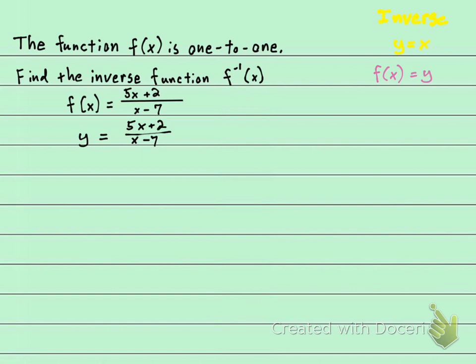So to get the inverse, remember we're going to switch all of our x's with y's and all of our y's with x's. So instead of y on the left, it's going to be x equals, instead of 5x plus 2, it's going to be 5y plus 2 over, instead of x minus 7, it's going to be y minus 7.